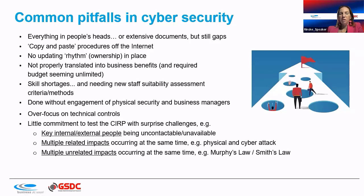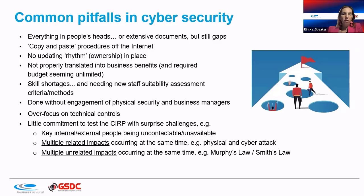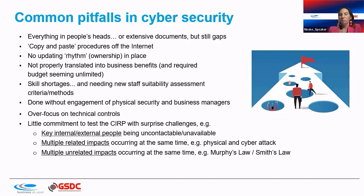There's also an over-focus on technical controls and little commitment to testing the cyber incident response plan with realistic challenges — such as key people being unavailable, multiple related impacts occurring simultaneously, or physical and cyber attacks happening at the same time. Protesters and hackers often work together on both physical and cyber attacks. Unrelated impacts occurring simultaneously — Murphy's Law, or what some call Smith's Law — can create even worse scenarios.